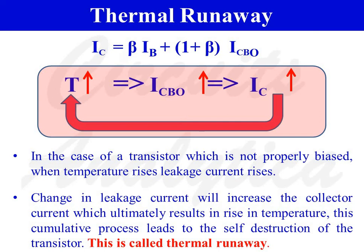So how can we avoid thermal runaway and stabilize the collector current? We can overcome thermal runaway by using biasing circuits with very good stability. Usage of such biasing circuits ensures that the collector current IC remains constant and is fixed at the centre of the DC load line.